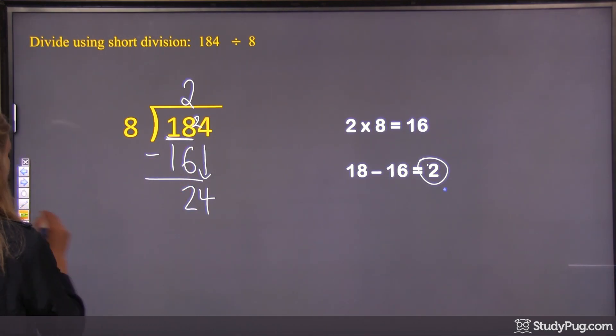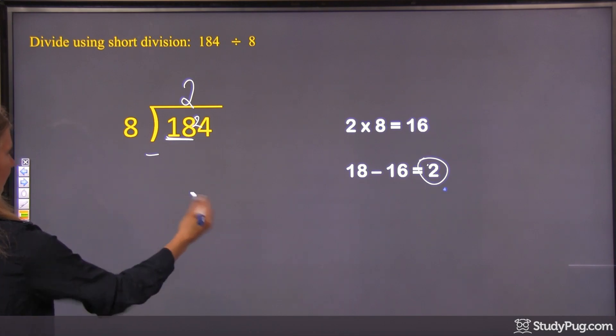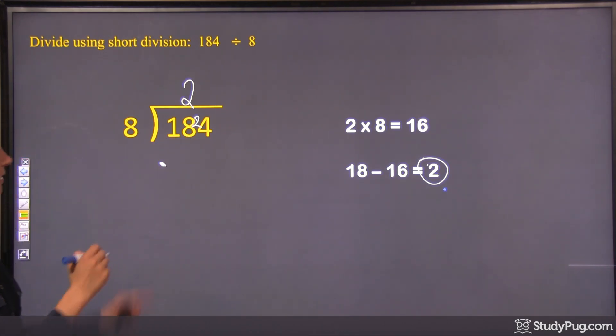So then we would get 24. Okay? So in short division, you don't have any of this. We're not going to write any of that down. All we do is that 2 in front of the 4 there.